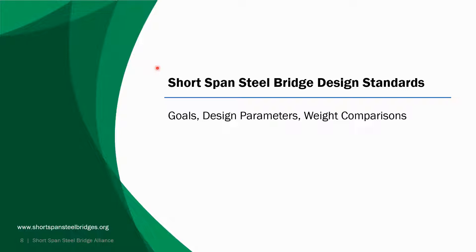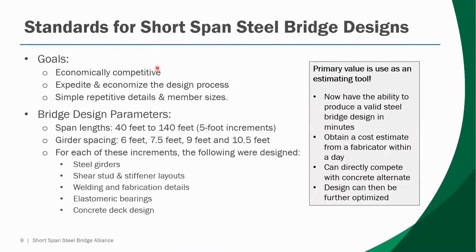Our goal was to develop economically competitive girders using repetitive details, repetitive member sizes, and straightforward plate selections — you'll see a lot of half-inch and three-quarter-inch plate, material that mills are rolling every day. We define a short span as anything less than 140 feet, so our girders were designed starting at 40 feet up to 140 feet in five-foot increments. ESPAN will round your input to the nearest design increment and report the next highest girder for your preliminary design.